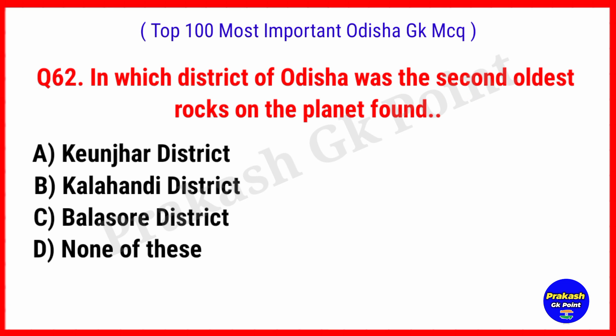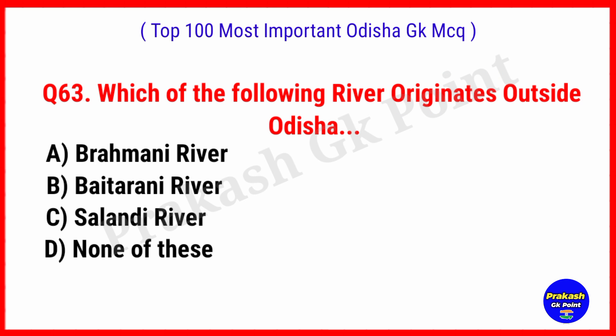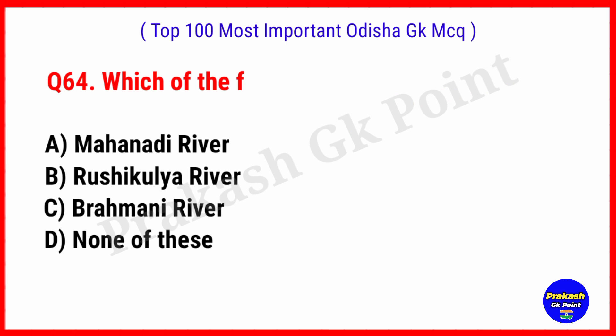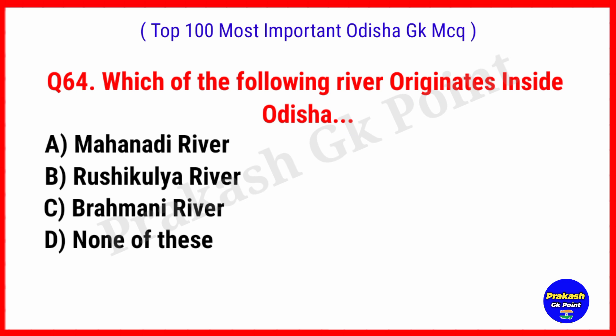In which district of Odisha were the second oldest rocks on the planet found? Answer: Option A, Keonjhar district. Which of the following rivers originates outside Odisha? Answer: Option A, Brahmani River. Which of the following rivers originates inside Odisha? Answer: Option B, Rusikulya River.